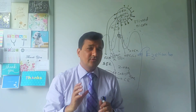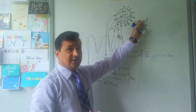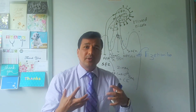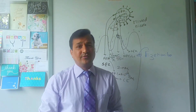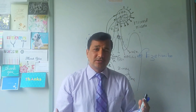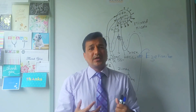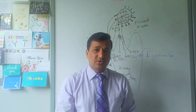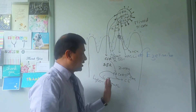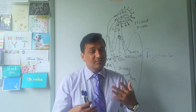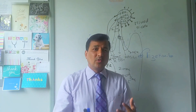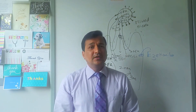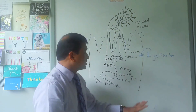In the intestinal lumen, lipids existed as triglycerides, cholesterol esters, and phospholipids. They were broken down into free fatty acids, 2-monoacylglycerol, cholesterol, and lysophospholipid for absorption, then re-esterified back to their original form. The only reason for this is to make the absorption process more efficient — triacylglycerol is a complex molecule that cannot simply be absorbed directly.